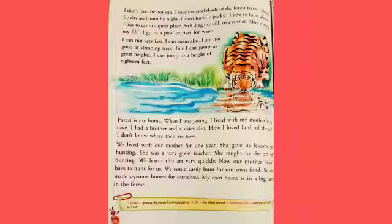I don't like the hot sun. I love the cool shade of the forest trees. Tiger doesn't like the hot sun — it stays in the shade of forest trees. I sleep by day and hunt by night. I love to hunt alone — he doesn't hunt in a group. I love to eat in a quiet place.